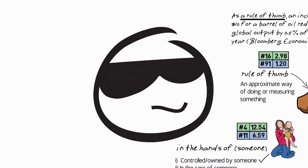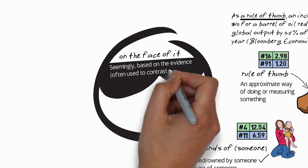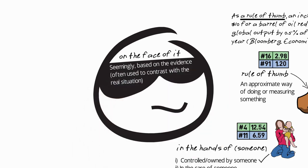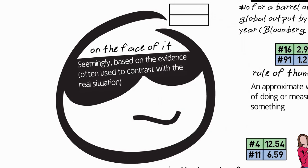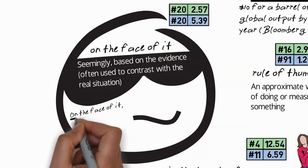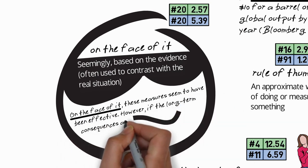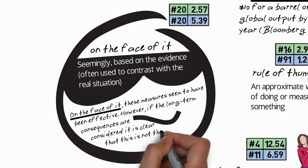And this idiom actually is not very common in academic speaking. In fact, it's the lowest ranked one in this video, ranked 91 in speaking but 16 in writing. So an example sentence: as a rule of thumb, an increase of $10 for a barrel of oil reduces global output by 0.5% after one year, Bloomberg Economics 2011. So in other words, this is not an exact equation but it's an approximate measure.